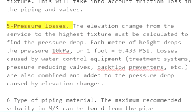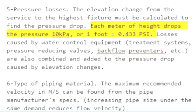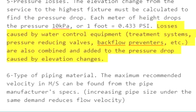5. Pressure losses. The elevation change from the service to the highest fixture must be calculated to find the pressure drop. Each meter of height drops the pressure 10 kilopascals, or 1 foot equals 0.433 psi. Losses caused by water control equipment, treatment systems, pressure reducing valves, backflow preventers, etc., are also combined and added to the pressure drop caused by elevation changes.